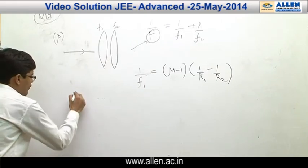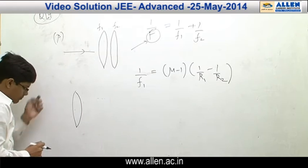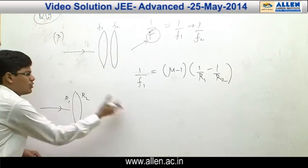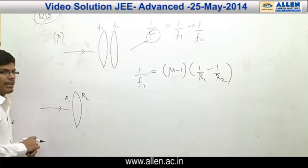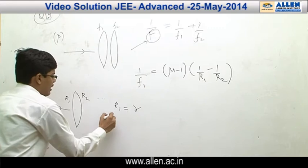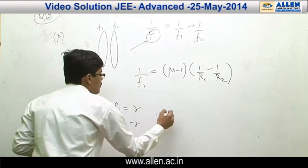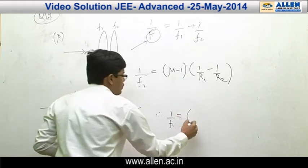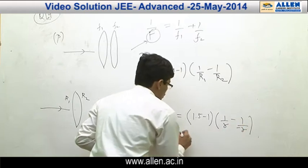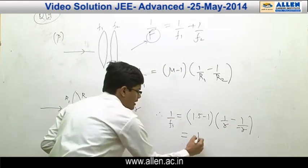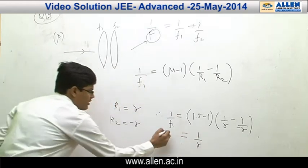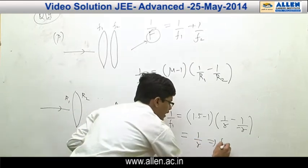Let us calculate F1 for this particular lens. This is R1 and this is R2. As we have assumed rays coming in this direction, this side will be positive and this side will be negative. So R1 would be R and R2 would be −R. Therefore, 1/F1 = (1.5 − 1)(1/R − 1/(−R)) = 0.5 × 2/R = 1/R. So F1 = R.